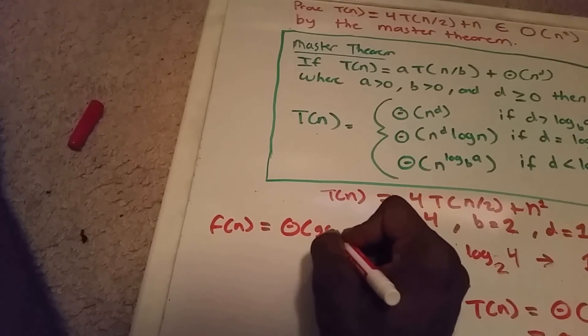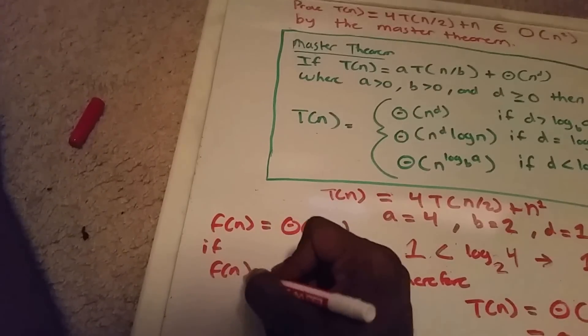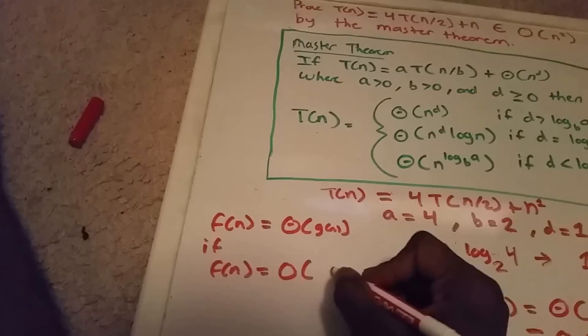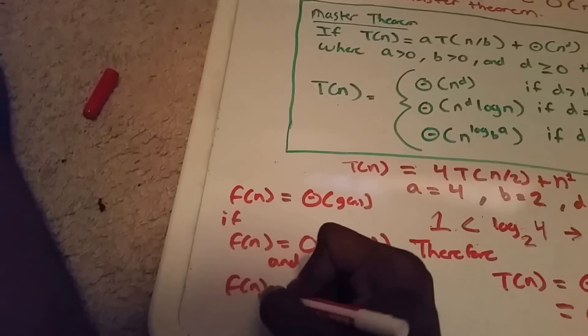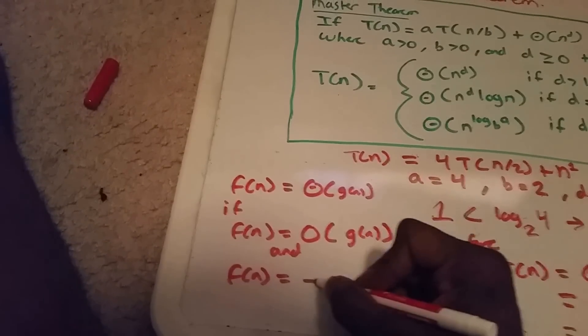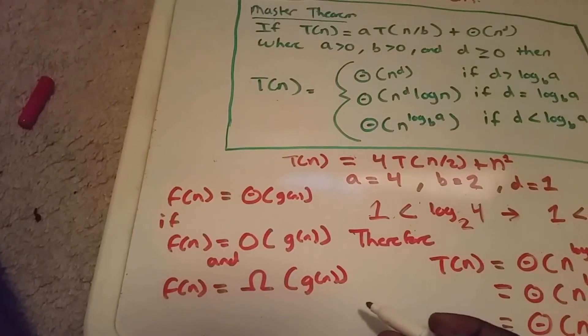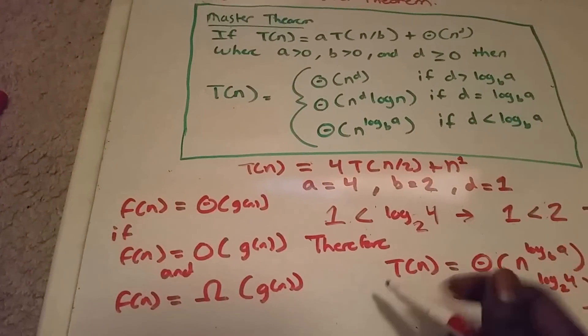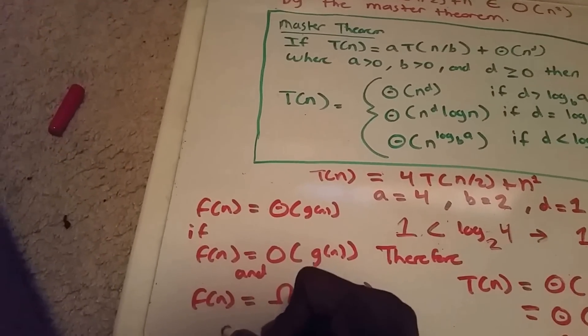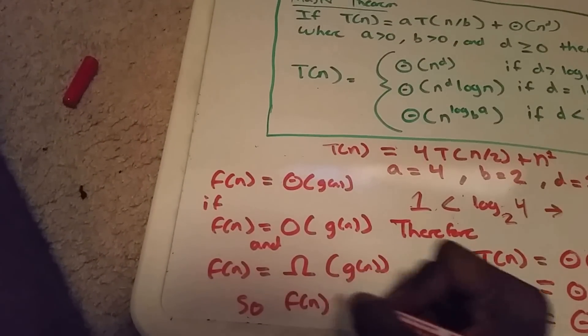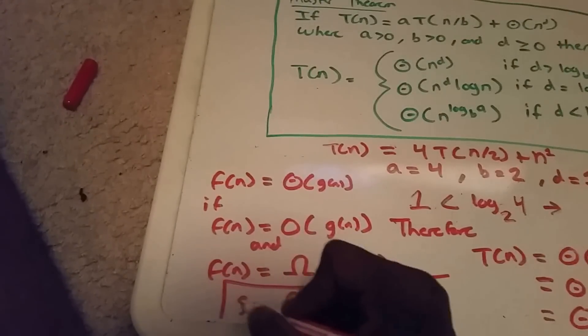If you know the theta definition, a function belongs to theta of g(n) if that function belongs to big O of g(n) and big Omega of g(n). So yes, this is true—f(n) equals big O of n squared. Thanks!